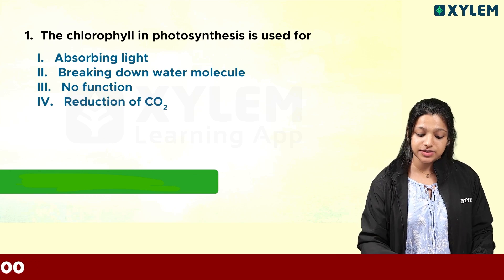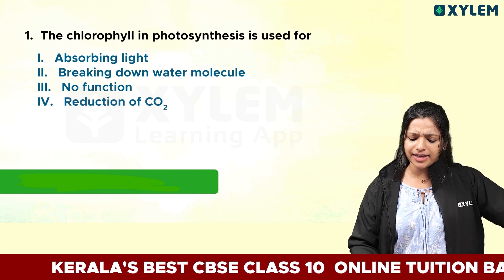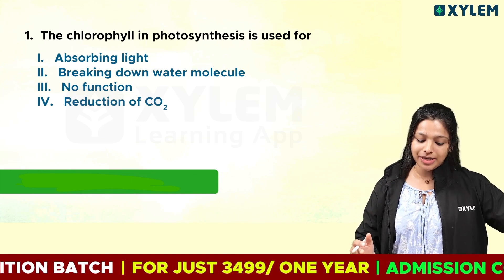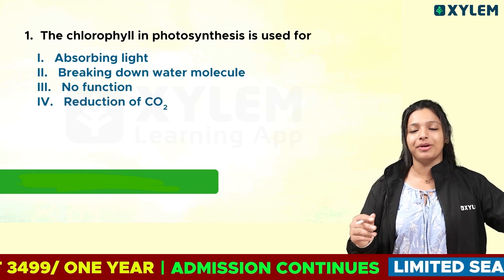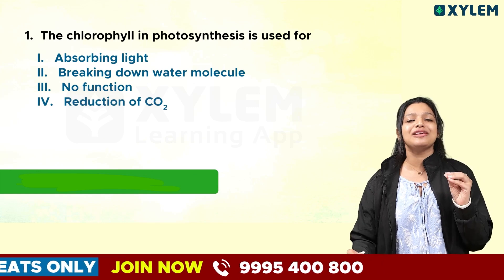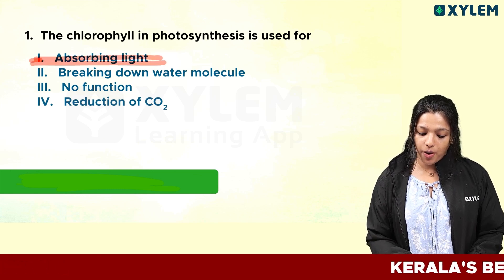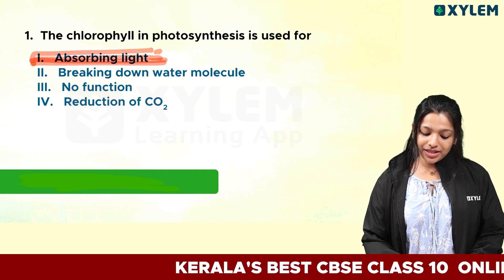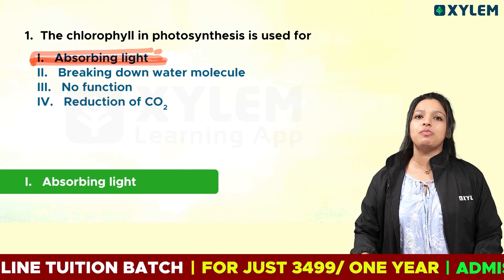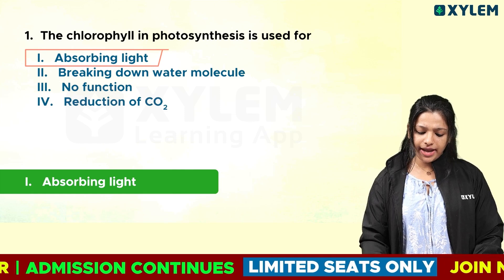The chlorophyll in photosynthesis is used for? The options include absorbing light, breaking down water molecules, and reduction of carbon dioxide. The answer is absorbing light. In our plants, chlorophyll will absorb the sunlight when it comes to photosynthesis — this is the chlorophyll pigment. So the answer is absorbing light. Clear and mark it.